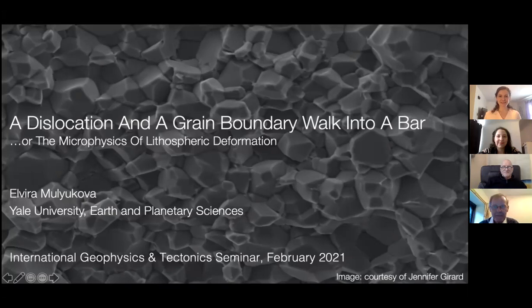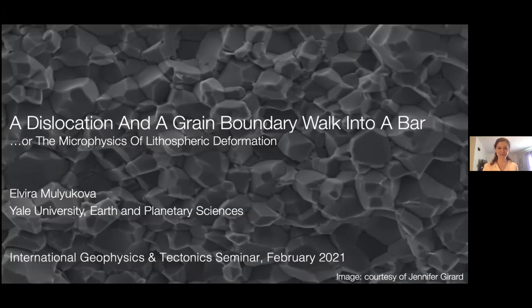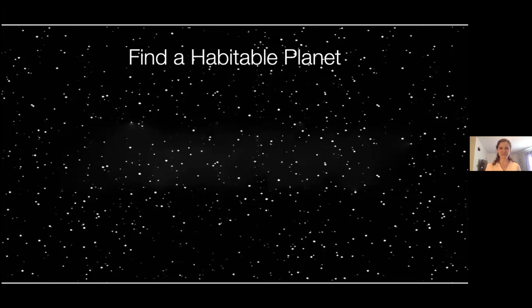Starting with my title slide, just to set the scene: what you're looking at here are the tiny grains that make up rocks. In this case, this is one of the rocks we find abundantly in the mantle — this is a magnesiobustite. For the next 40-45 minutes, we'll be spending time thinking about the smallest processes at very small length scales, but connecting them to geological processes like lithospheric deformation and plate tectonics.